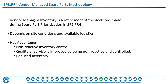While vendor managed spare parts are identified during stocking strategy decision-making, technology and logistics improvements buffer us against risk that used to be associated with not having stock in-house. Depending on site-specific factors such as location, the evaluation of how to use suppliers to store inventory is really a refinement of the decisions made during spare part prioritization.